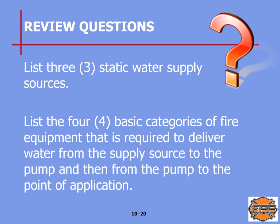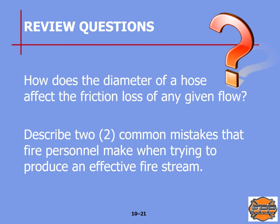Some review questions: List three static water supply sources — that will be on page 228 of your manual. List the four basic categories of fire equipment required to deliver water from the supply source to the pump and then to the point of application — that's on page 228. How does the diameter of a hose affect the friction loss of any given flow — page 229. And describe two common mistakes that fire personnel make when trying to produce an effective fire stream — that is on page 232 of your manual.